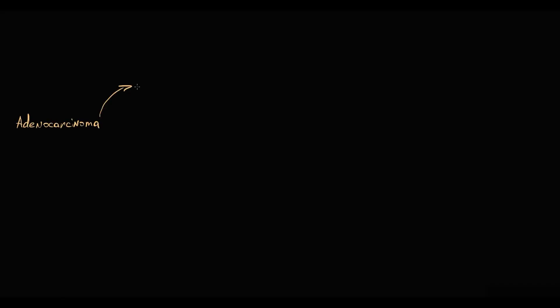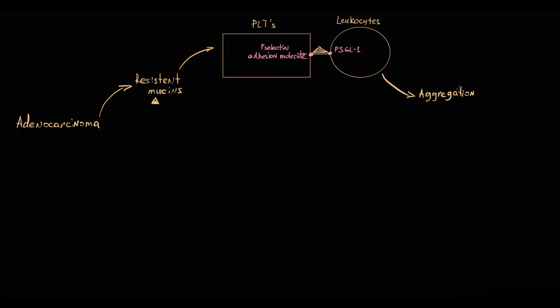And resistant mucins in the blood bind and basically activate P-selectin adhesion molecules on platelets. P-selectin is a key adhesion molecule that in an activated state binds to P-selectin glycoprotein ligand type 1 on leukocytes with formation of a platelet leukocyte aggregate in the small blood vessel.